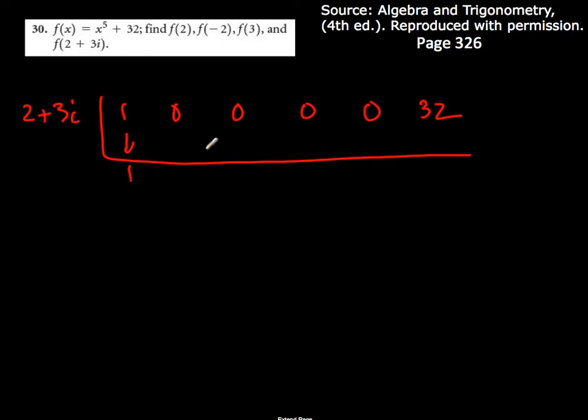Then I multiply this times this. It's a monomial multiplied by a binomial. So 1 times that will just be 2 plus 3i. Add 2 plus 3i again.